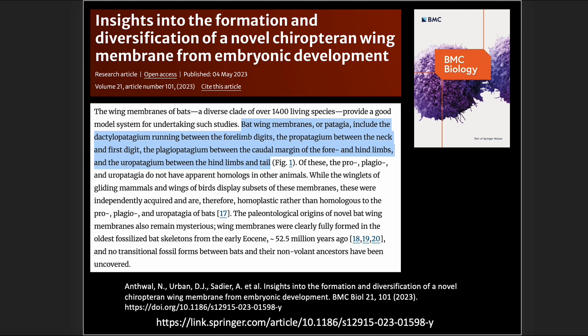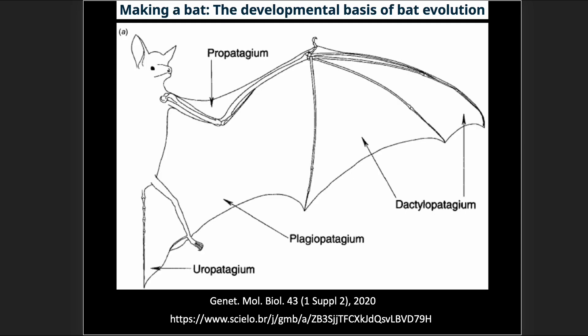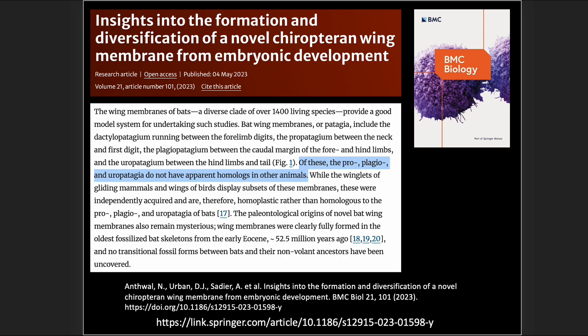Let's look at another paper from 2023. It discusses the different membranes of the bat — between the neck and forelimb, between the digits of the forelimb, between the forelimb and body, and at the hind limb. So four different types of membranes. Of these, the propatagium, plagiopatagium, and uropatagium do not have apparent homologs in other animals — in other words, these are novel, unique to the bat.